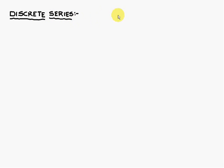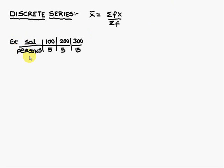The average salary is 200 rupees. Next we come across the second model: discrete series. In this type, a table is given. For example, salary 100 with 5 persons, salary 200 with 5 persons, and salary 300 with 15 persons. The difference from the previous problem is that here frequencies are given alongside the salary values.